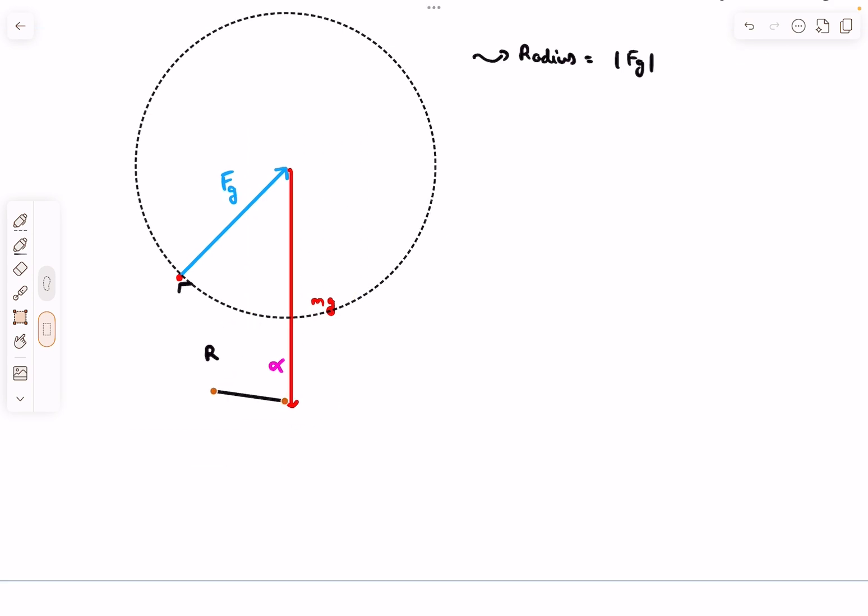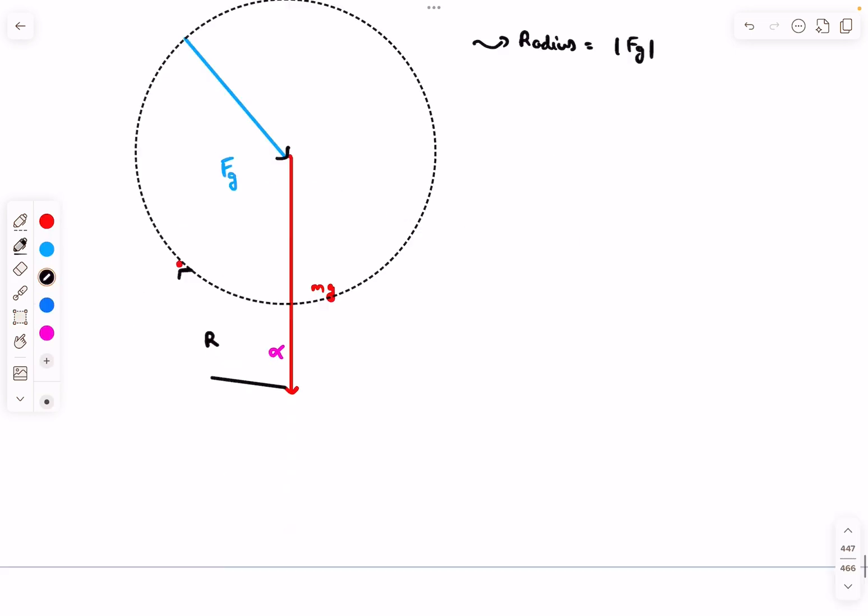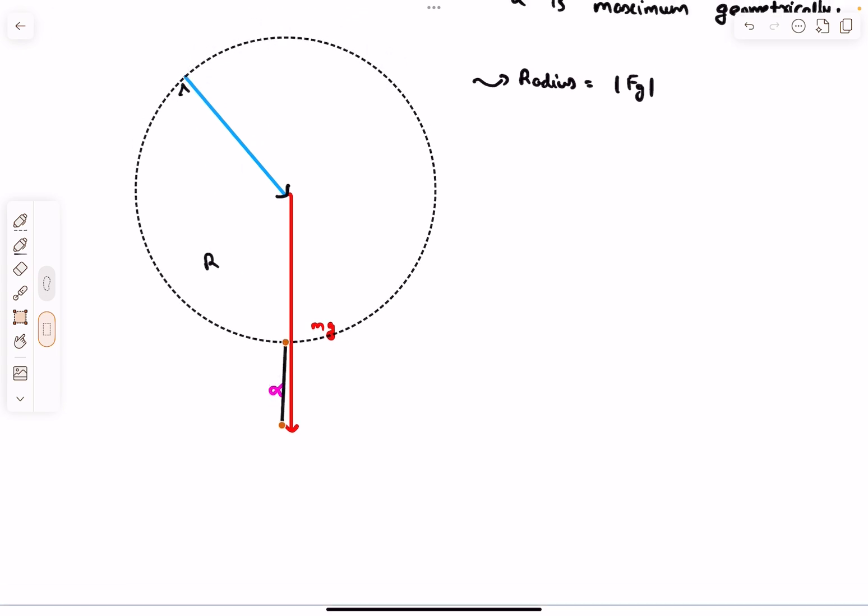The reason for drawing this circle is that it helps us visualize the minimum value of alpha very easily. We know the tail of Fg will lie on the circle. Let's say at some instance over here. In this situation, this is Fg vector. Vector R is something like this to complete the vector triangle. In this situation, alpha is zero.